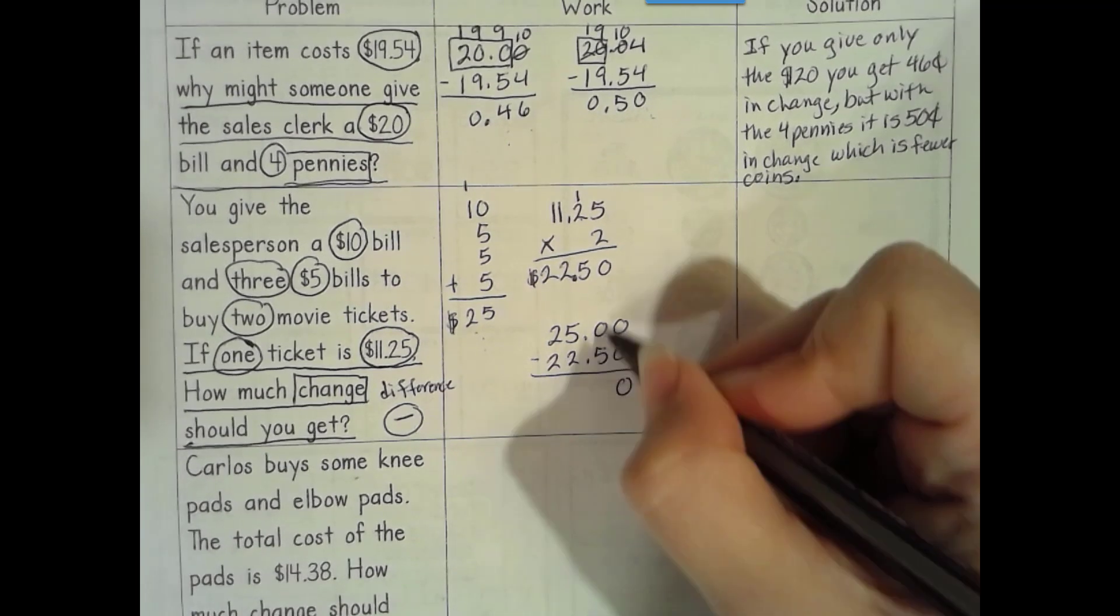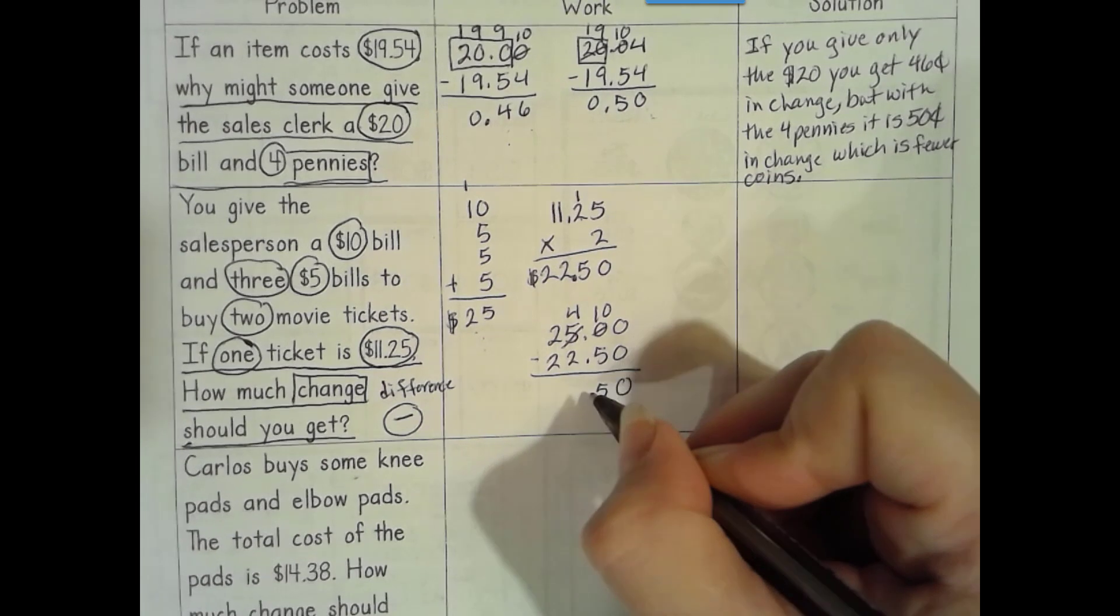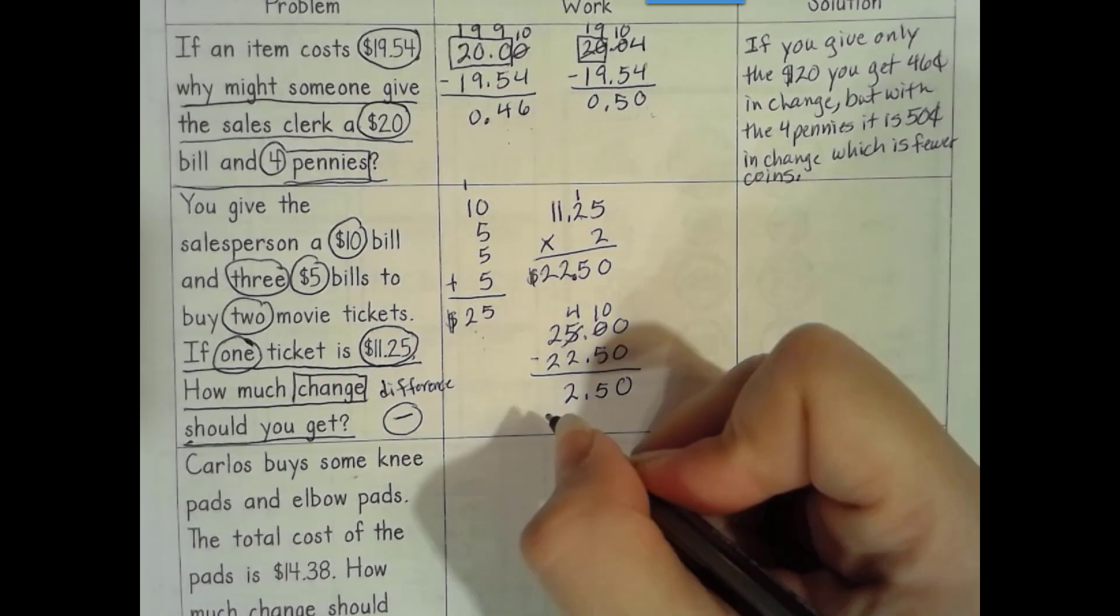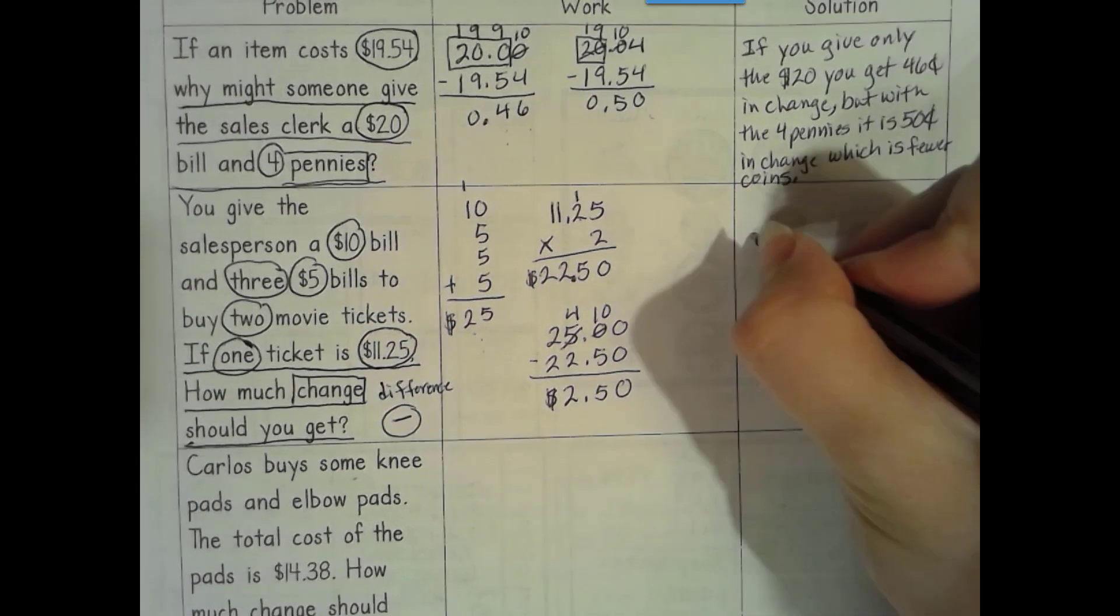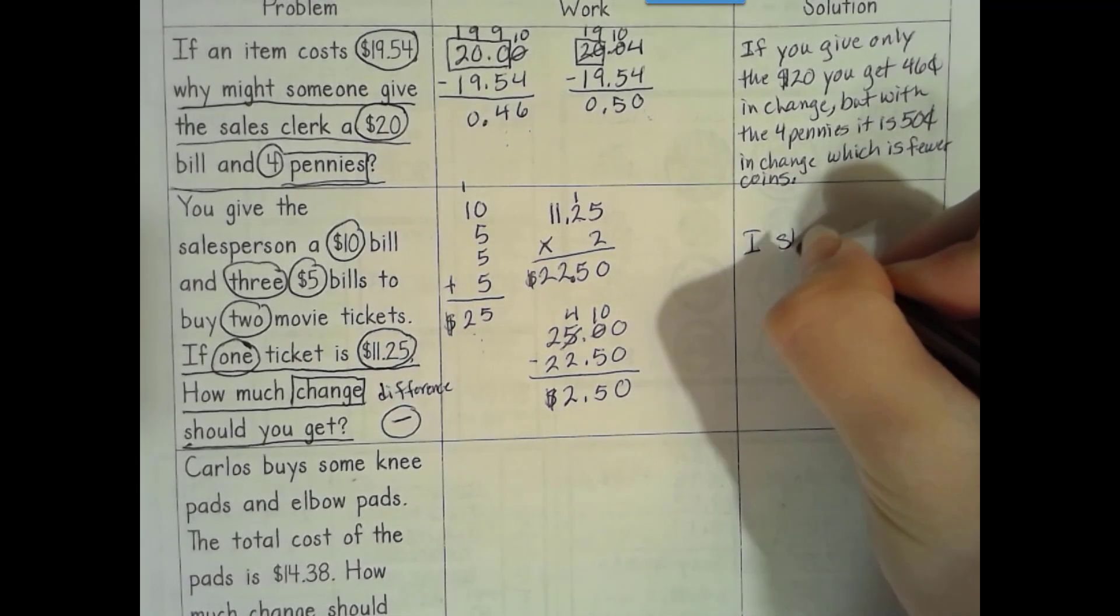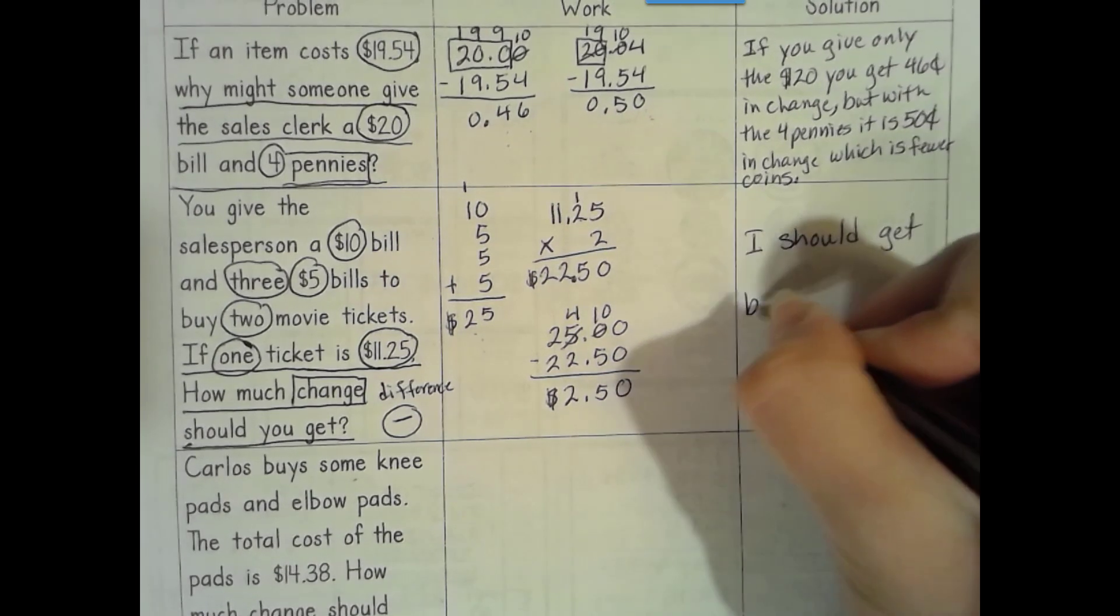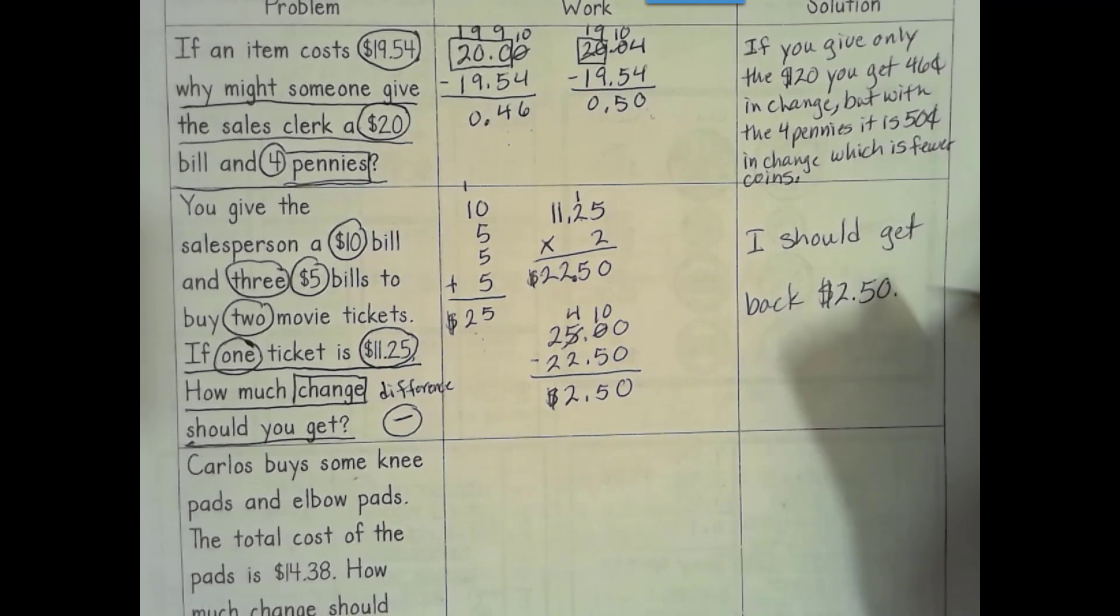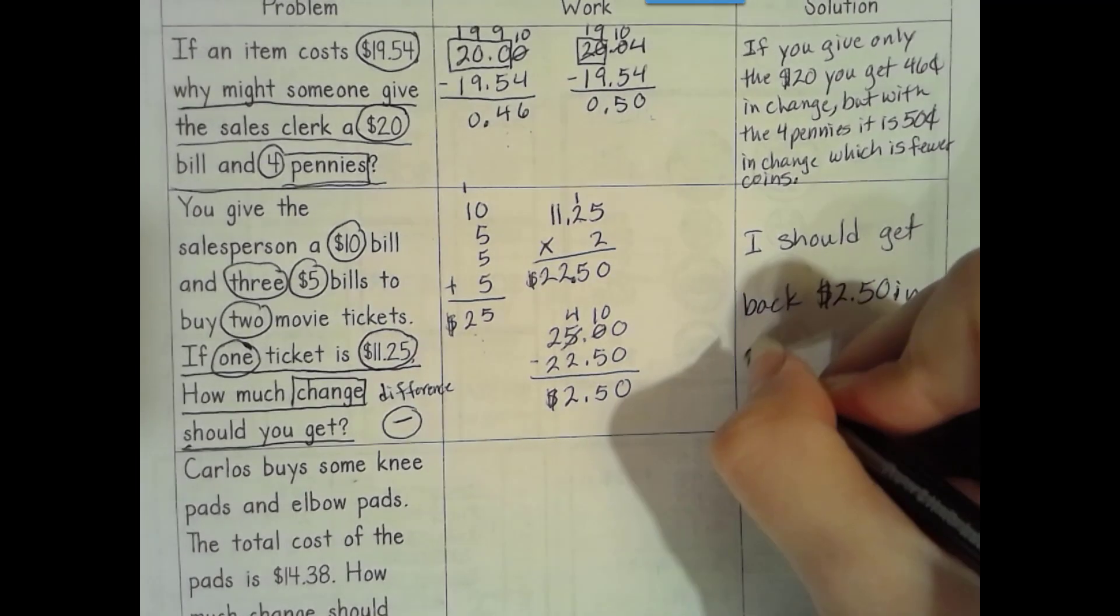Number's the same, zero's the game. More on the floor, go next door. Regroup 10 more. More on top, no need to stop. Number's the same, zero's the game. So it looks like we have $2.50 left over. I should get back $2.50. Oops, let's complete my sentence. In change.